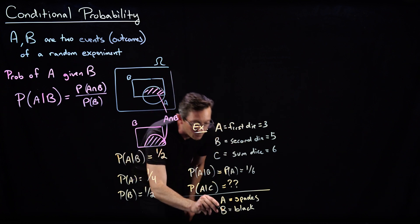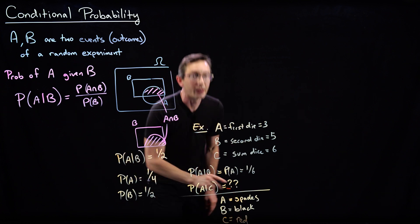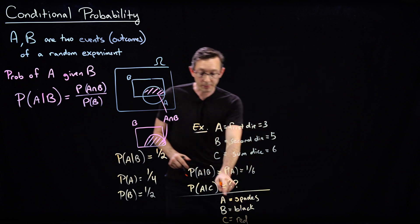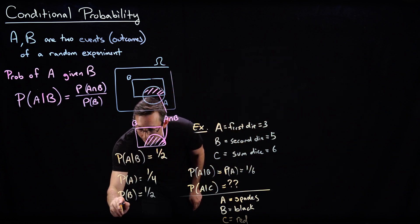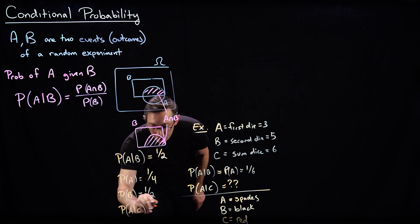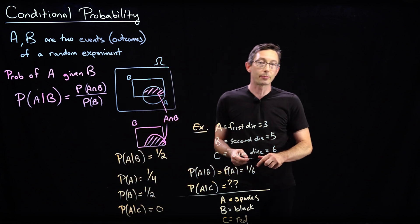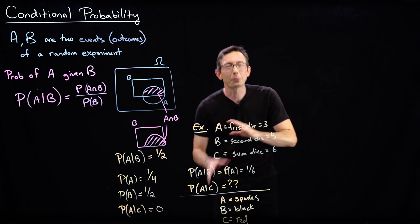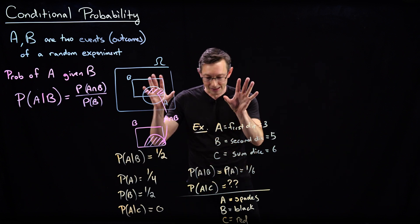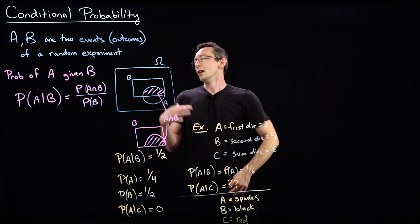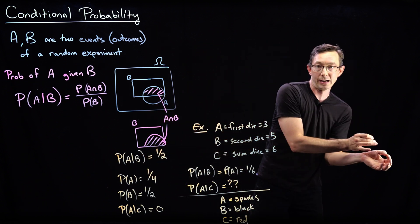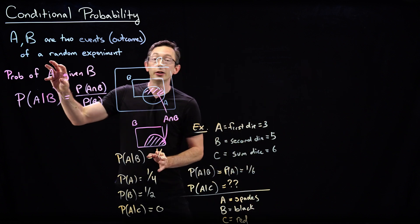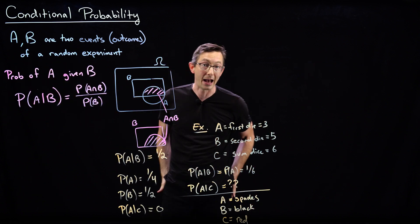What if event C is that my card is red? If I tell you the card is red, what's the probability it's a spade? That dramatically changes the probability — there's no chance it's a spade if it's red. It's a simple example, but it gives you the idea that partial information about another event can really tell you a lot more about event A.